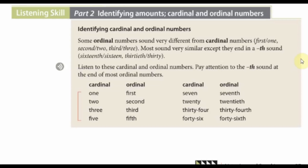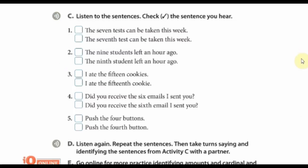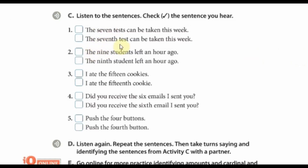Now let's move on to the activity on the next page. This is activity C. Listen to the sentences, then check the sentences you hear. Pay attention to the cardinal and the ordinal numbers.